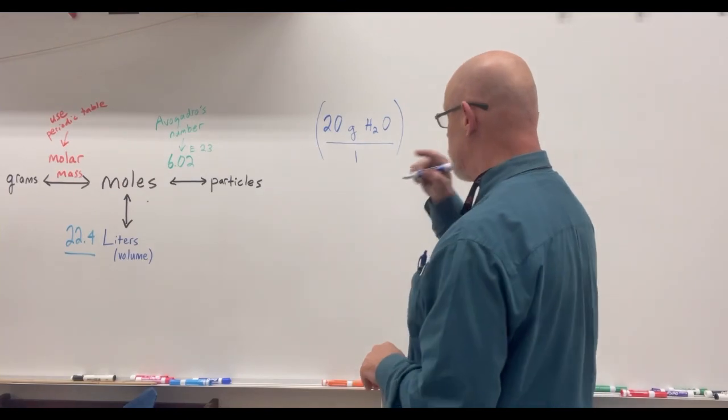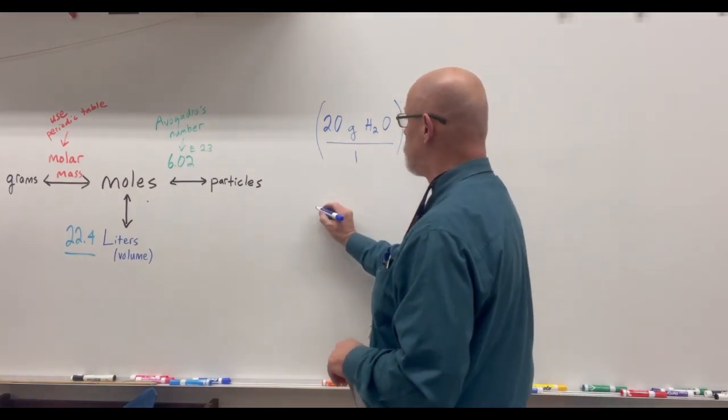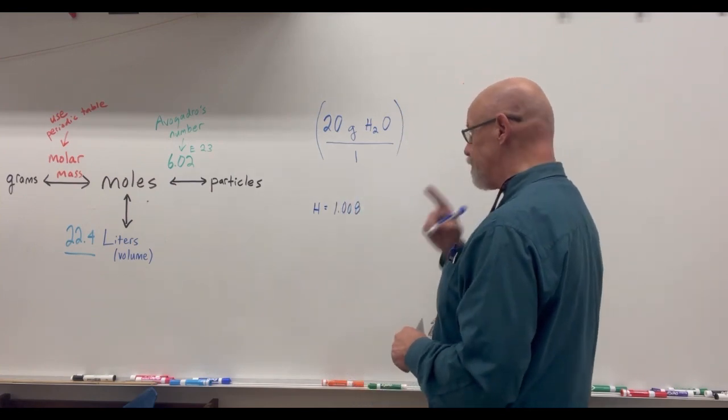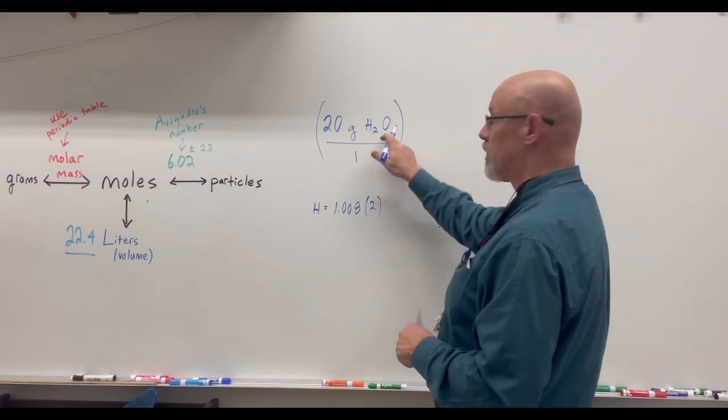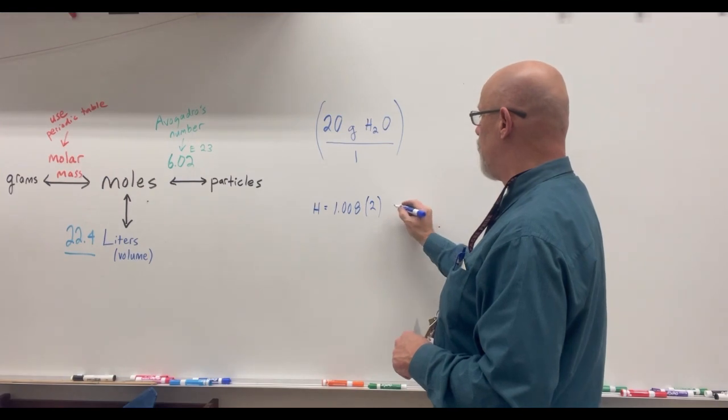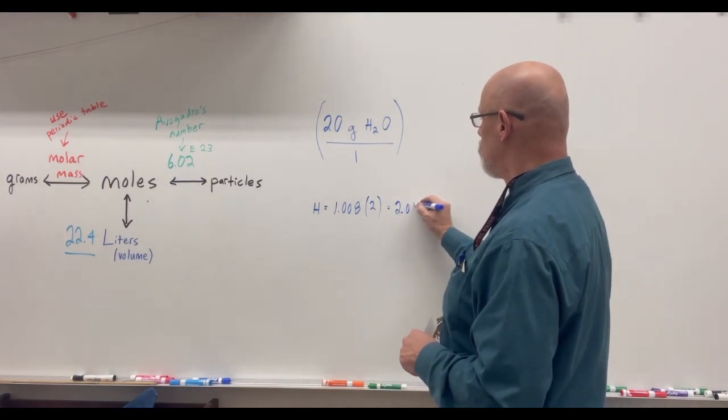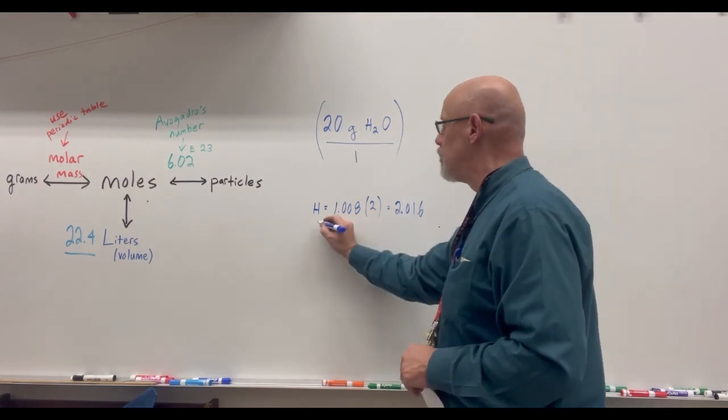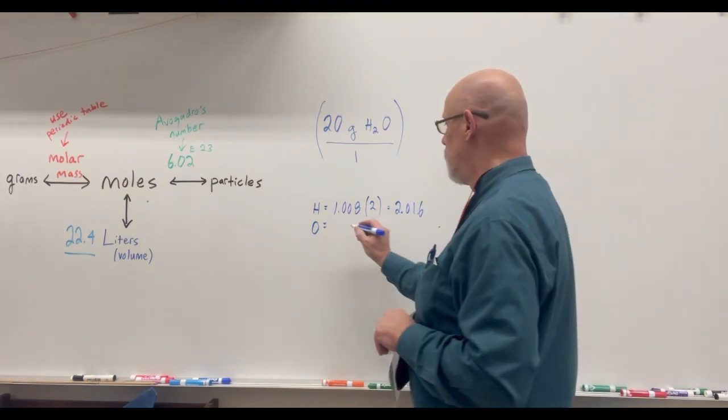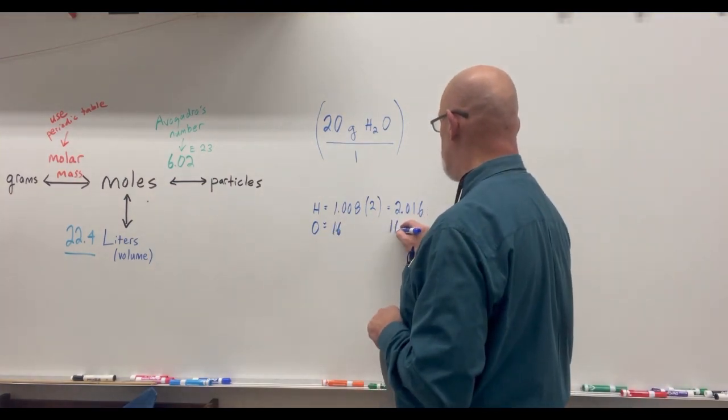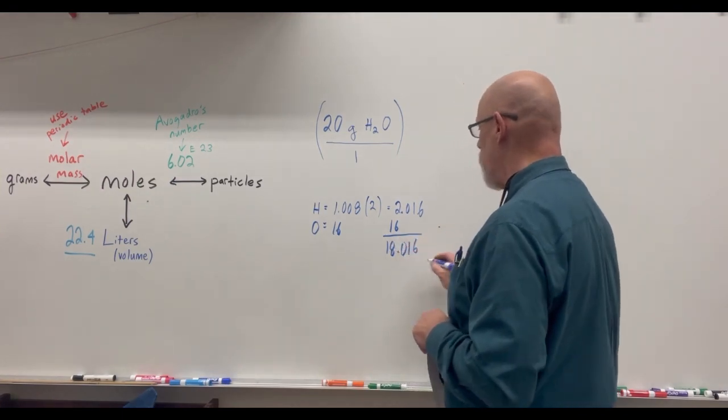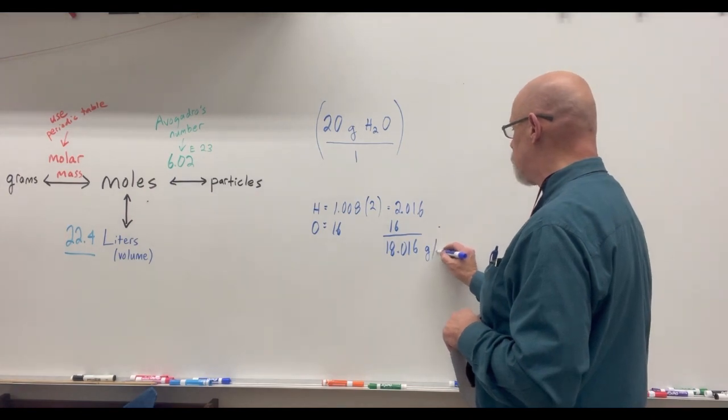If we consult the periodic table that's given in class it will tell us that one hydrogen is 1.008 grams per mole. But we need two of those hydrogens because water's formula is H2O. So we'll take that 1.008 we'll multiply it by 2 and we'll end up with this number 2.016. We'll also need one oxygen. And the periodic table will tell us that we need 16 grams per one oxygen. So we take those two numbers and we add them together and this is our molar mass for water. We say 18.016 grams per mole of water.